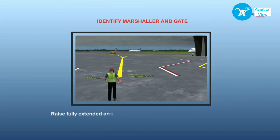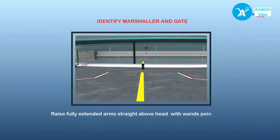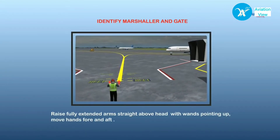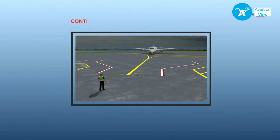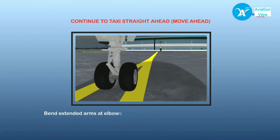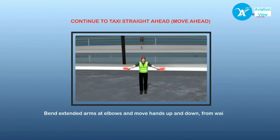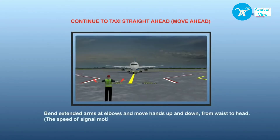When the aircraft is approaching the parking bay, the marshaller stands at the gate and holds his wands up to identify both the marshaller and the gate — the place where the aircraft comes to a stop and parks. Once the aircraft is on the yellow center line, the marshaller indicates it should continue to taxi straight ahead by bending extended arms at the elbows and moving them up and down from waist to head.